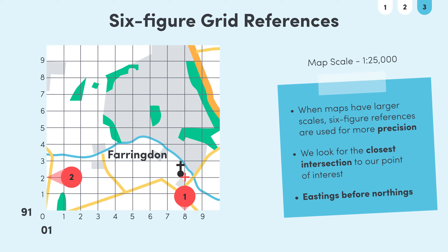The closest easting reference is eight squares along 01, and the closest northing is two small squares up from 91, so the six figure grid reference of this church is 018912. Notice how the 01 and 91 stay the same as our four figure reference since we're in the same area — we're just being a little bit more precise by adding the extra number to show where we are in the grid cell.